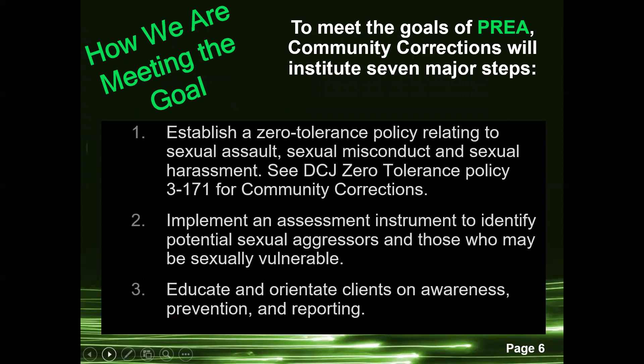To meet the goal of PREA, community corrections will institute seven major steps. First, we want to establish a zero tolerance policy relating to sexual assault, sexual misconduct, and sexual harassment. See DCJ's zero tolerance policies as well.